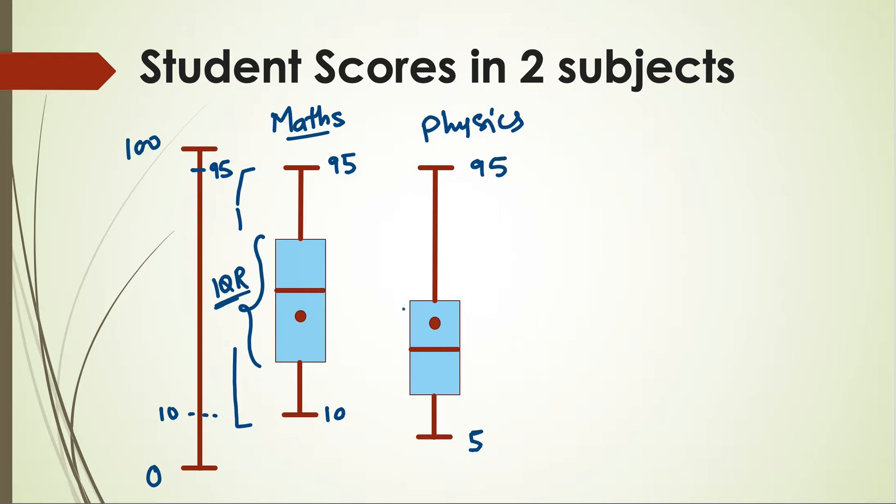Maths marks, and there is less dispersion in Physics marks. That is, on average you can see that the Physics marks are on a lower side, maybe due to toughness of the paper.